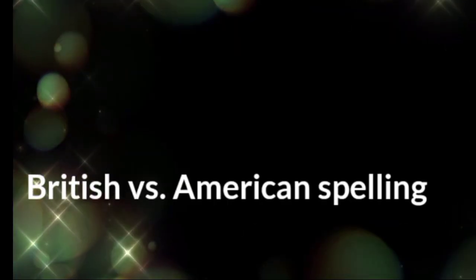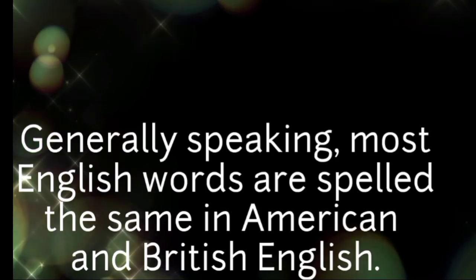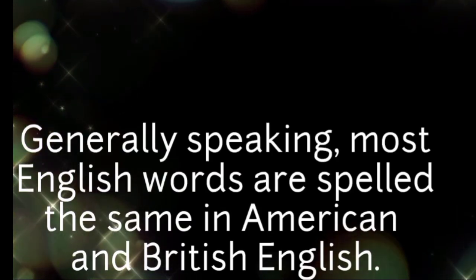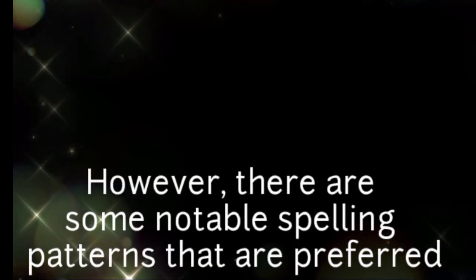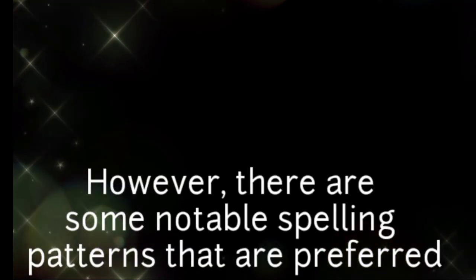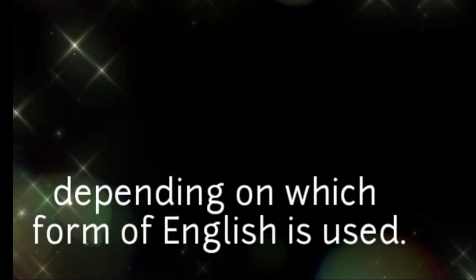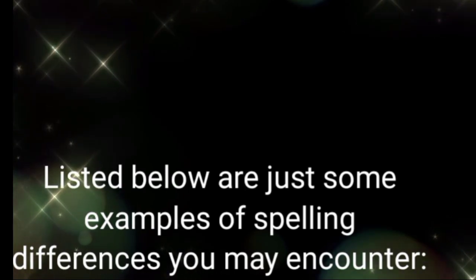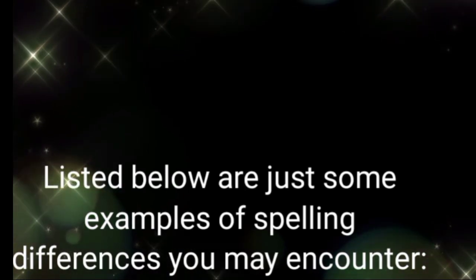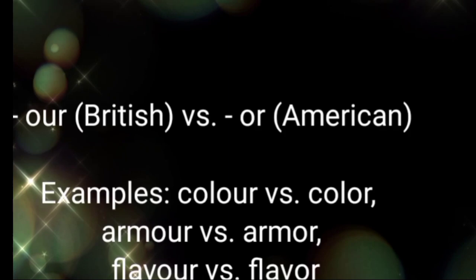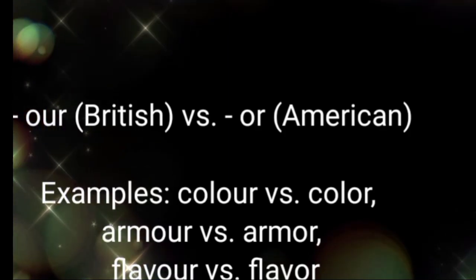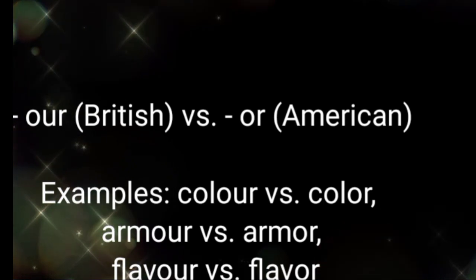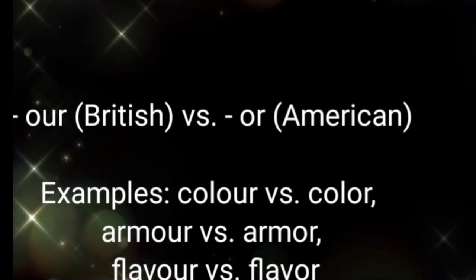British versus American spelling. Generally speaking, most English words are spelled the same in American and British English. However, there are some notable spelling patterns that are preferred depending on which form of English is used. Listed below are just some examples of spelling differences you may encounter. One common pattern: '-our' (British) versus '-or' (American) — examples include colour versus color, armour versus armor, and flavour versus flavor.